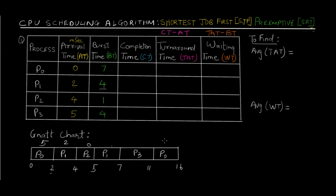Now we can read off the completion times from the Gantt chart. P0 completed at 16ms, P1 at 7ms, P2 at 5ms, and P3 at 11ms. Turnaround time is given by the formula: CT minus AT (completion time minus arrival time). So: P0 = 16−0 = 16, P1 = 7−2 = 5, P2 = 5−4 = 1, P3 = 11−5 = 6. Waiting time is turnaround time minus burst time: P0 = 16−7 = 9, P1 = 5−4 = 1, P2 = 1−1 = 0, P3 = 6−4 = 2.